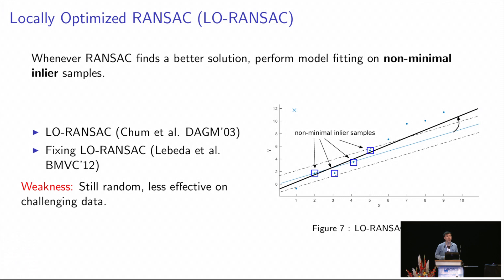A more effective approach is the locally optimized RANSAC or low RANSAC. In this approach, it contains an outer RANSAC iteration. And whenever this outer RANSAC finds a better solution, it initiates an inner RANSAC, where it tries to fit model on non-minimal inlier samples, in the hope that fitting model on non-minimal samples will improve the solution quality. However, this approach is still a random heuristic, which is less effective on challenging datasets.